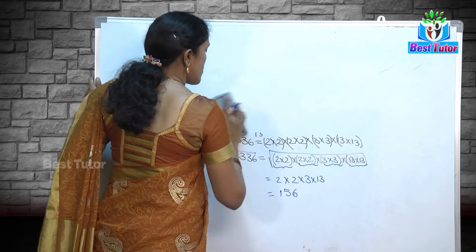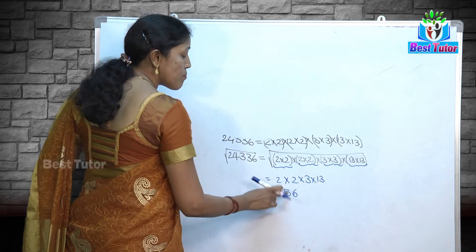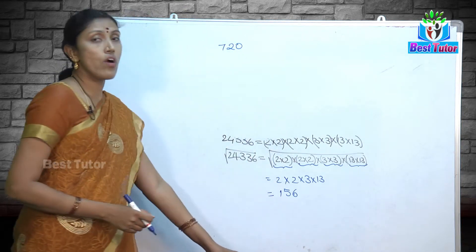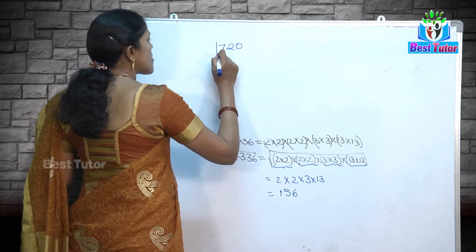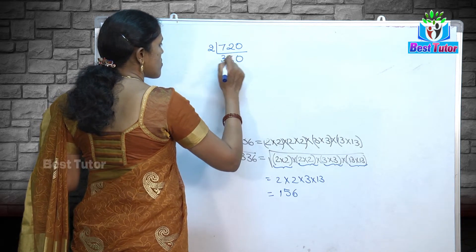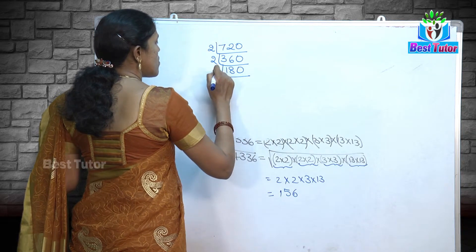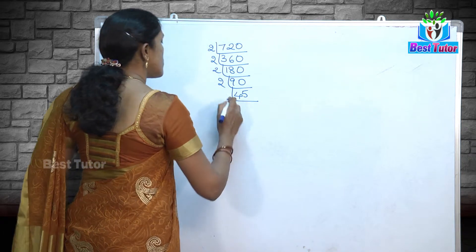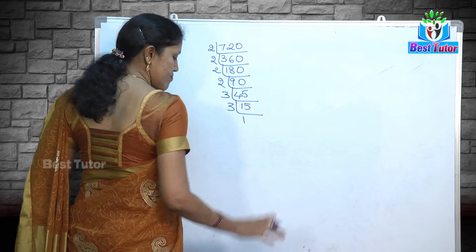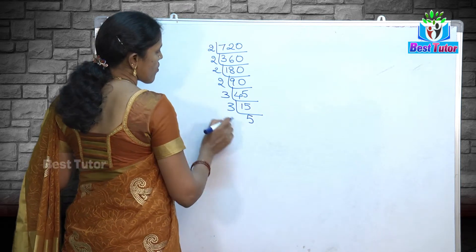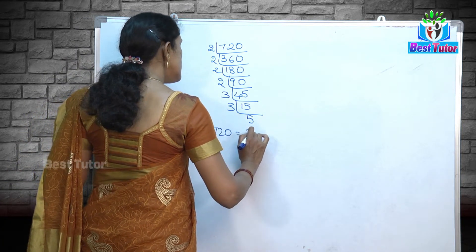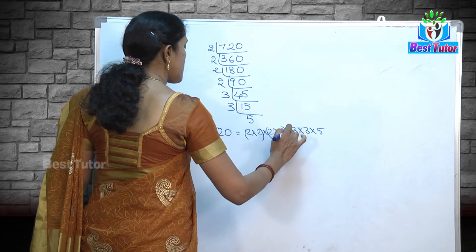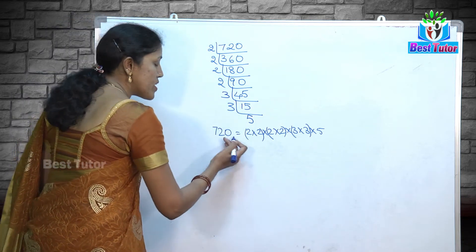Observe that in all three examples we obtained a perfect square. But what if the given number is not a perfect square? Let us consider the example 720. We do not know whether it is a perfect square. Let us check: 720 is divisible by 2 repeatedly, and then by 3. After full prime factorization, when we start pairing identical prime numbers, 5 is left out without a pair. So 720 is not a perfect square.